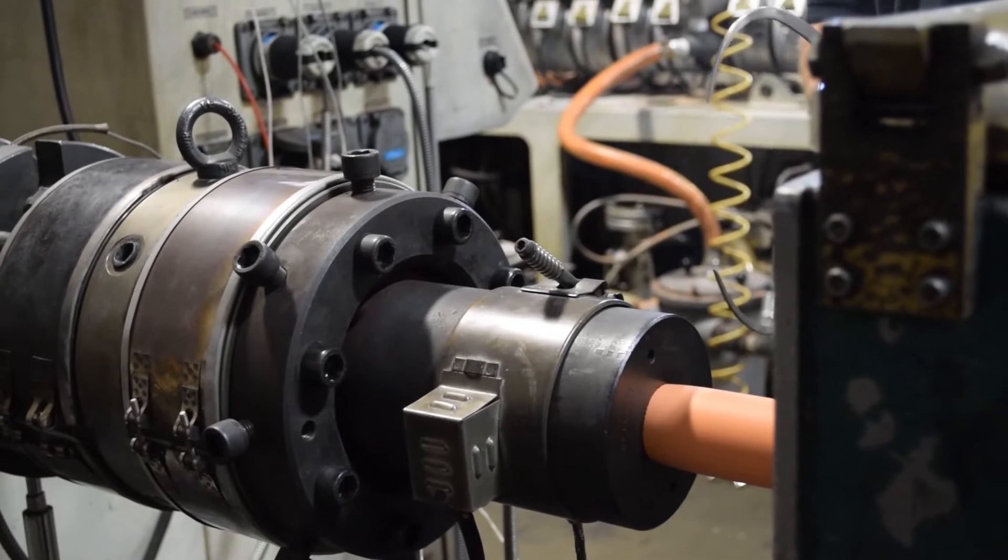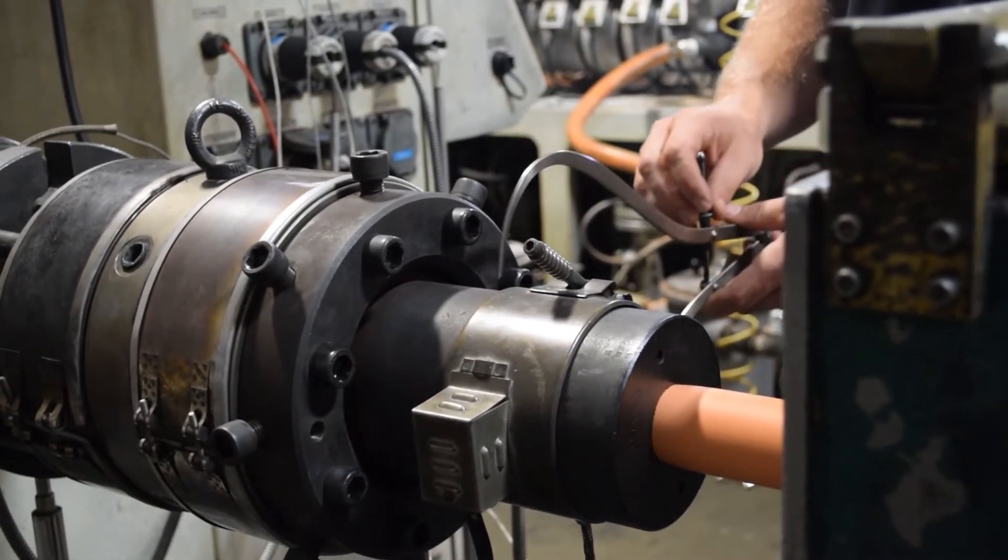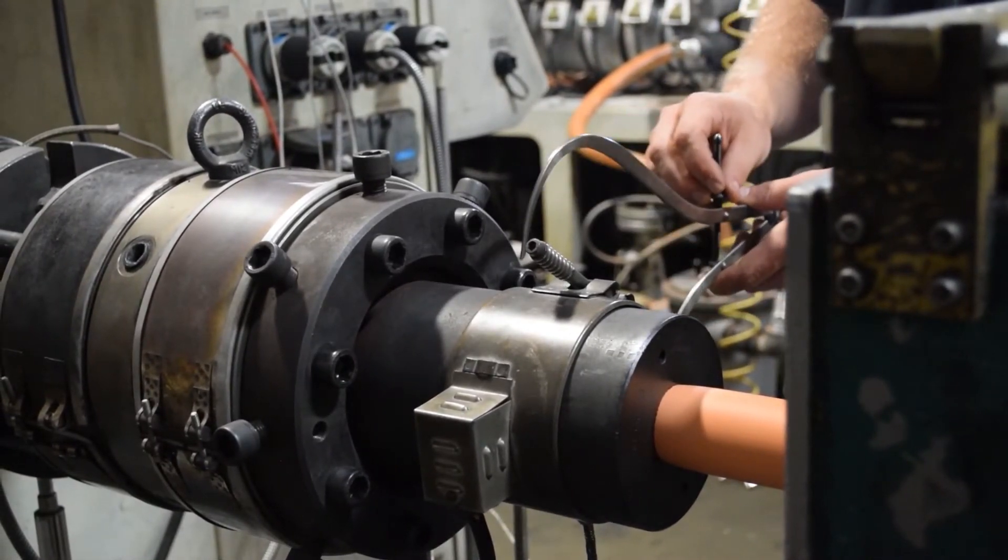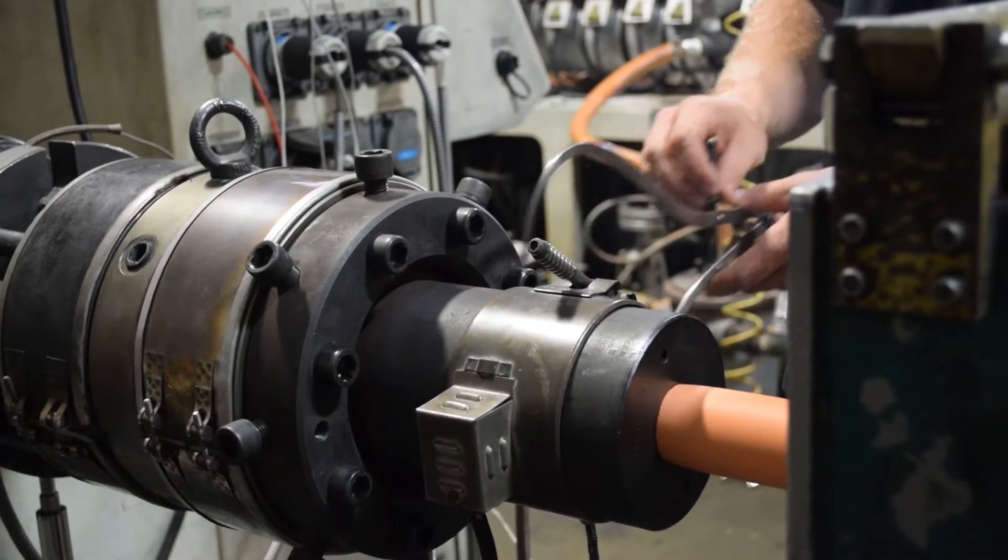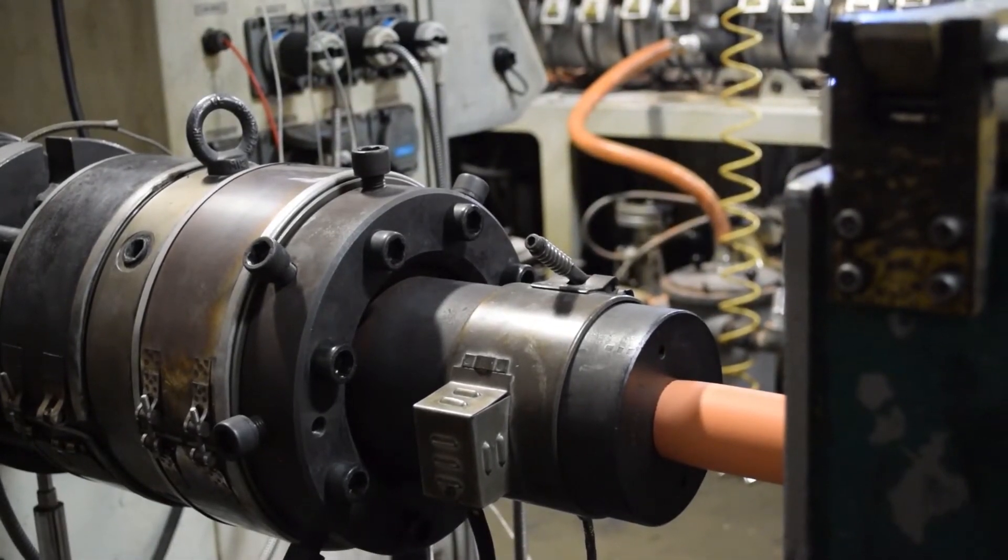The first thing we need to determine is the diameter of the band heater. Use outside calipers to find the diameter of the barrel. The caliper should slide over the barrel with minimum resistance.